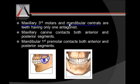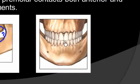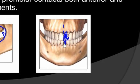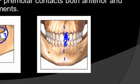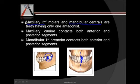The same scenario applies to the mandibular central incisor. It contacts the maxillary central incisor, but there is no opposite tooth mesial to contact because of the midline. Therefore, two teeth that have only one antagonist are the maxillary third molar and the mandibular central incisor.